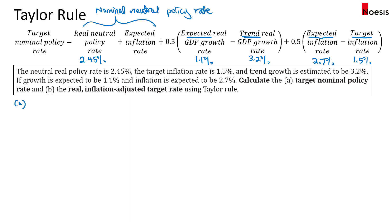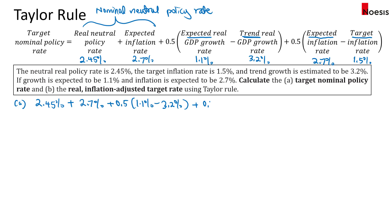For A, the target nominal policy rate will be 2.45 percent plus the expected inflation rate of 2.7 percent, plus 0.5 times (1.1 percent minus 3.2 percent), plus 0.5 multiplied by (2.7 percent minus 1.5 percent). The nominal neutral policy rate component equals 5.15 percent.